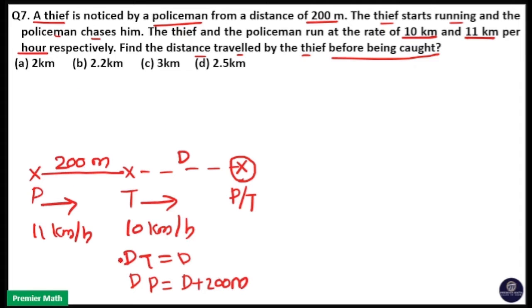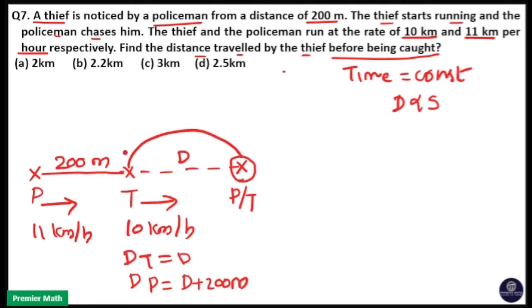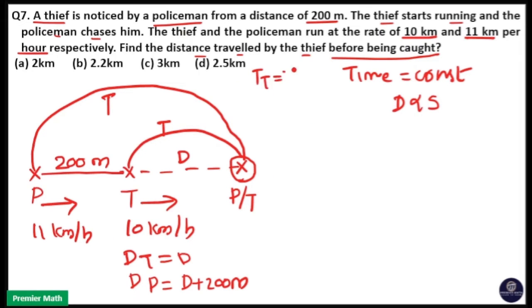Here you can see both distance and speed are varying, which means time is constant here. Whenever time is constant, distance is directly proportional to speed. The time taken by the thief to reach point x is the same as the time taken by the police to reach point x — that is why the police catches the thief at point x. So time taken by the thief is the same as time taken by the police.